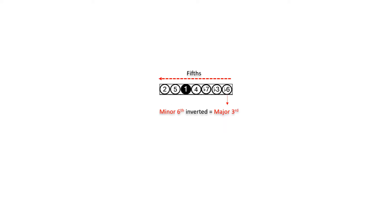Now that we've seen how to recognize sharps in minor scales, let's use our second shortcut to identify flats in minor scales. Only if we start a major third below the root, the first flat, if one exists in the minor key, will appear right away. From here, we must count up in fifths until we have located all seven notes of the scale.